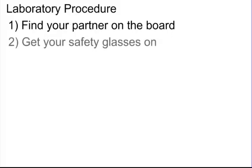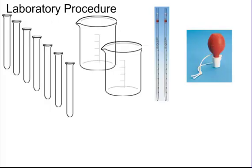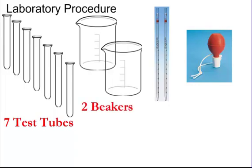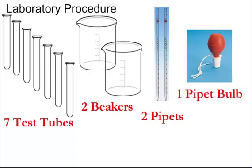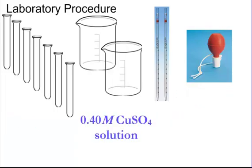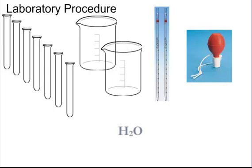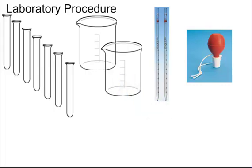When you walk into the lab on the block day, find your partner listed on the board and get your safety glasses on — especially during the pipetting. With your partner, get seven test tubes, a test tube rack, two beakers, two pipettes, and one pipette bulb. One beaker and one pipette are dedicated solely to copper sulfate, and the other beaker and pipette are solely for water. Keep these separate.